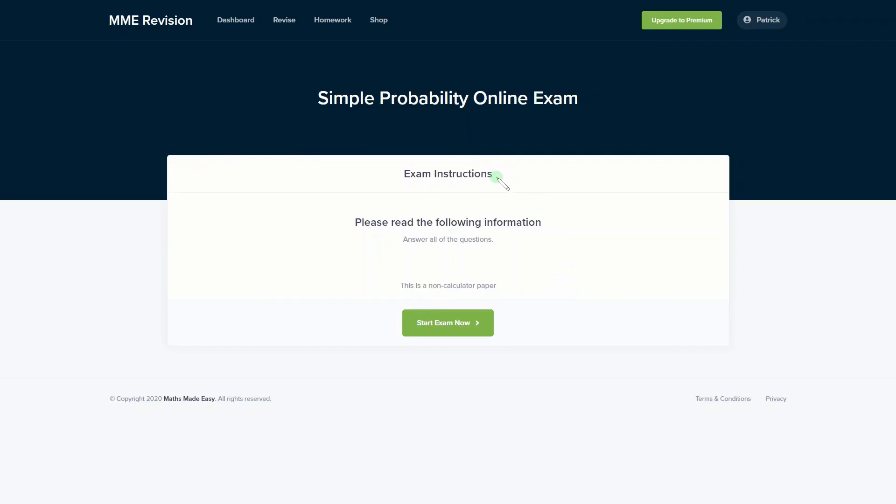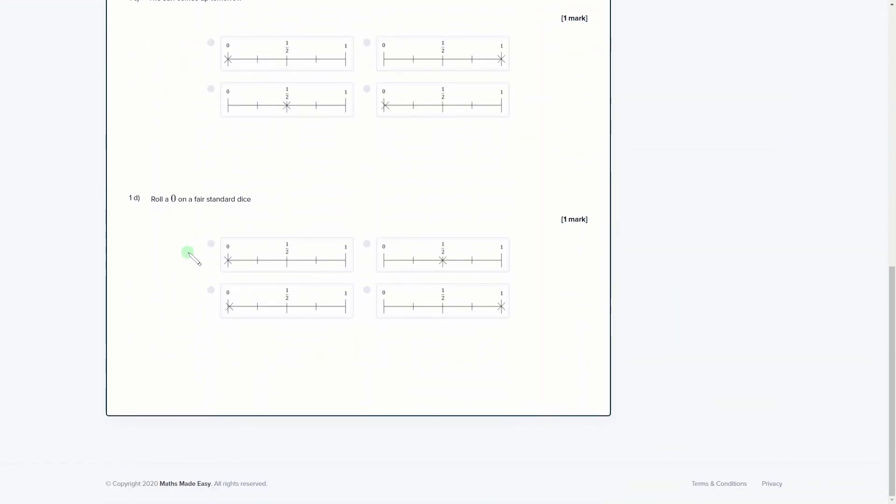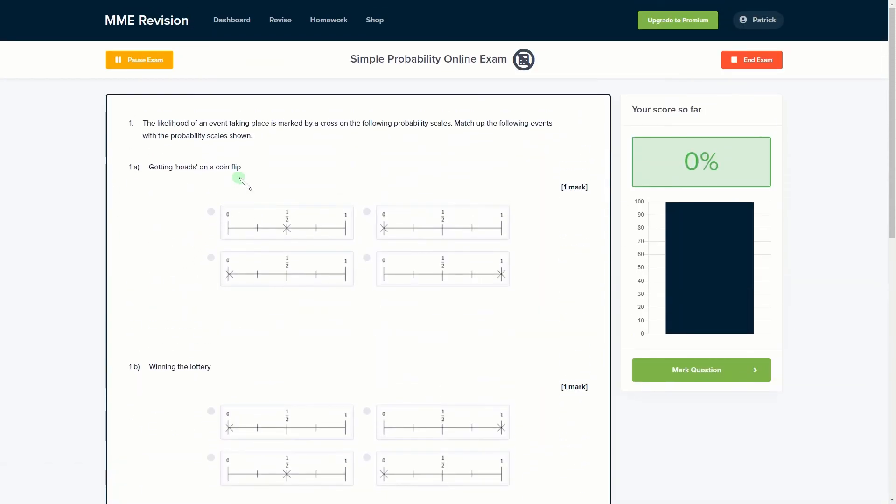If you feel ready to tackle some probability questions, then why not have a go at our online exam? It's available through our revision platform. If you take the test, you'll find loads of different questions, a variety of different question types, and you get instant feedback on all of them. You can keep track of your progress and find out where you need to improve. If you're interested, then click the link below and it will take you straight over there.